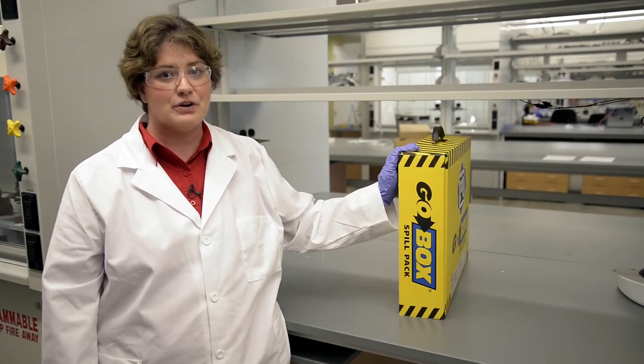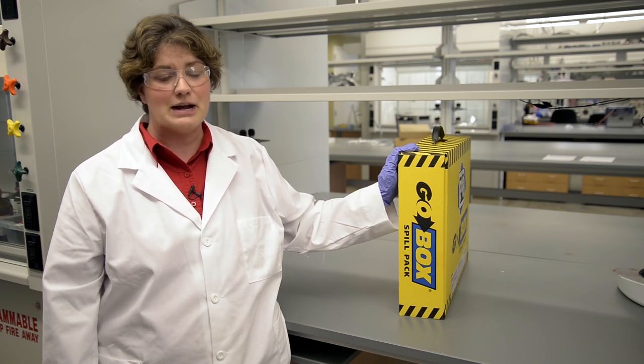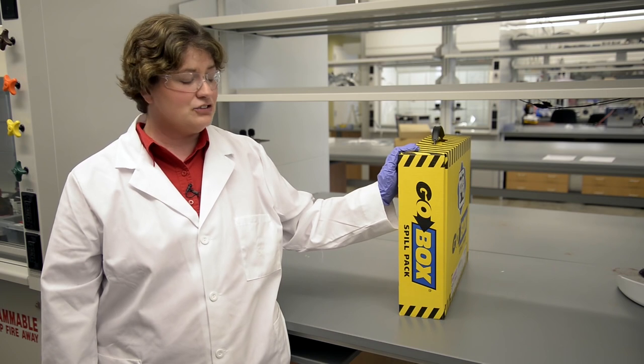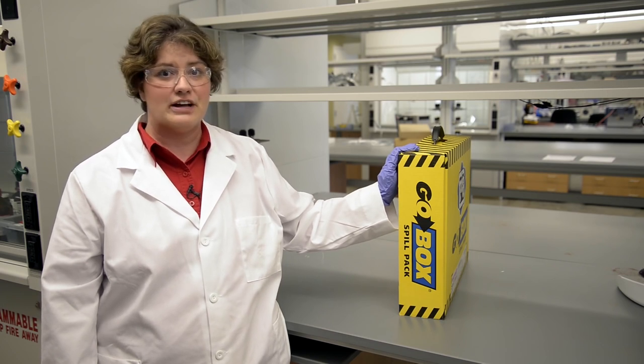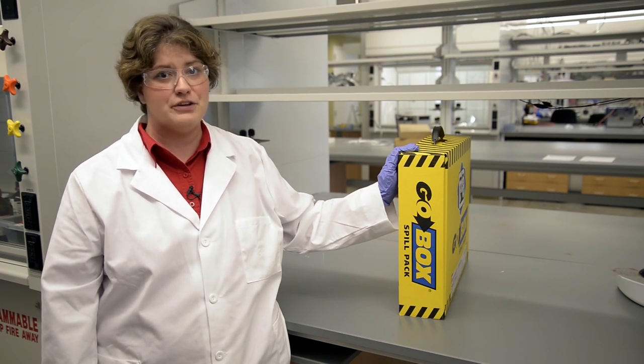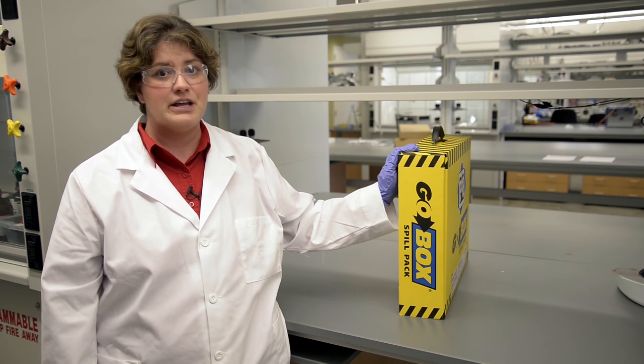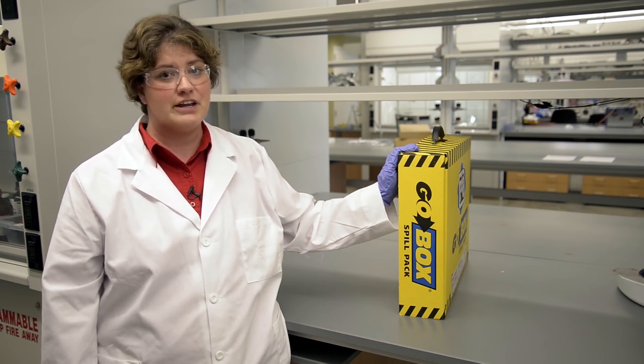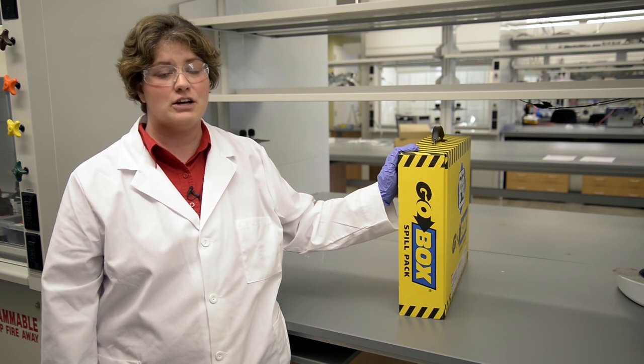Whenever there's a spill in the laboratory, the first thing you want to do is always alert your instructor or alert others in the laboratory so that they don't come in the area of the spill. Assess the situation and make sure you can clean it up yourself, and don't be afraid to call for help if you do need help cleaning up a spill. You can either call environmental health and safety, or if you need to evacuate the building, you could pull the fire alarm pull station located outside the laboratory.